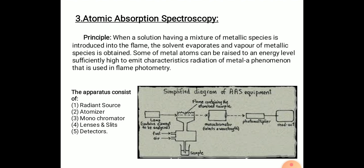The apparatus consists of radiant source, atomizer, monochromator, lens and slits, and detectors. So this is about the apparatus. Next we will study the procedure.